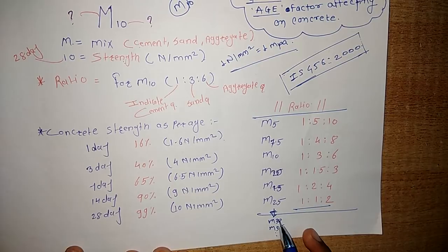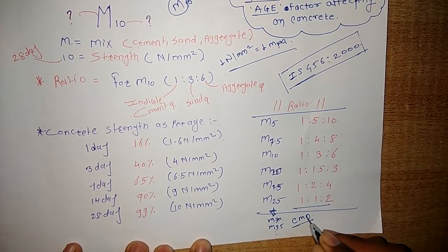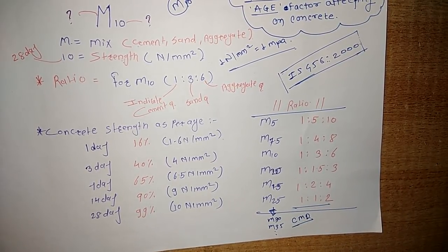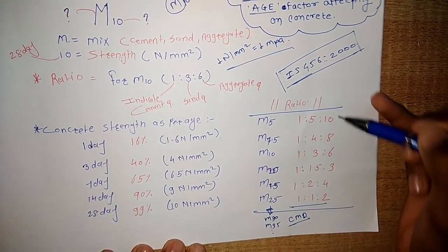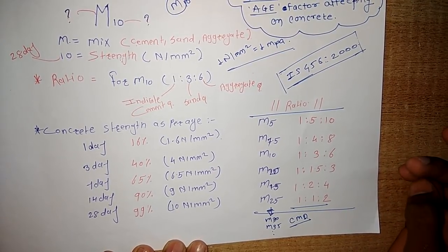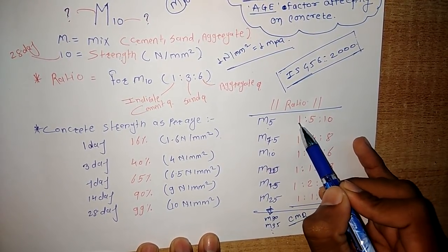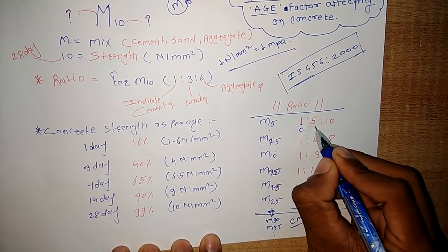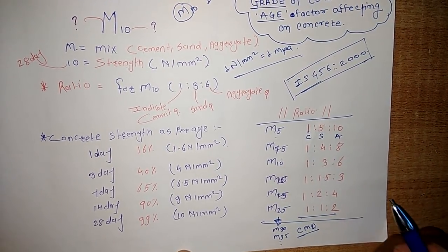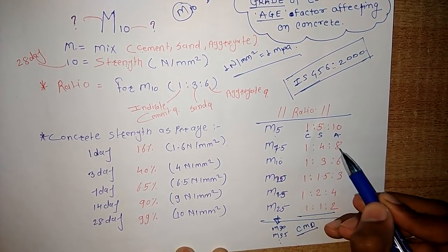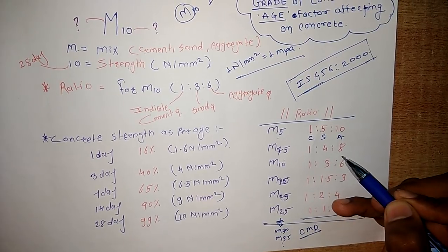For M30 and M35, a special concrete mix design is used by companies where various proportions of cement, sand, and aggregate are mixed to achieve the required strength. Up to M25, standard mix ratios are used. For M5, the ratio is 1:5:10 — 1 part cement, 5 parts sand, and 10 parts coarse aggregate. For M7.5 it is 1:4:8. For example, using 1 kg cement requires 4 kg sand and 8 kg coarse aggregate.